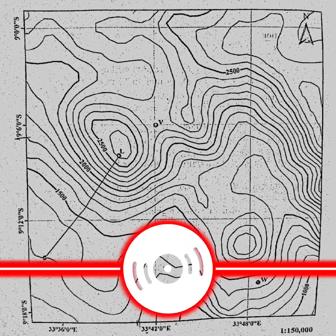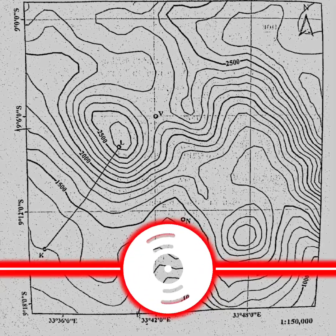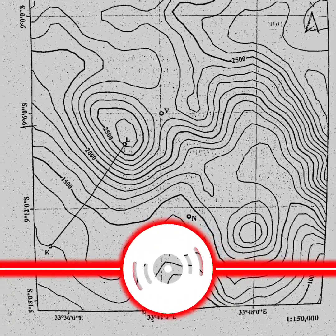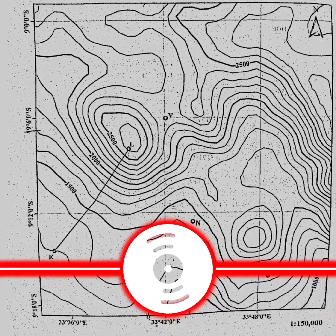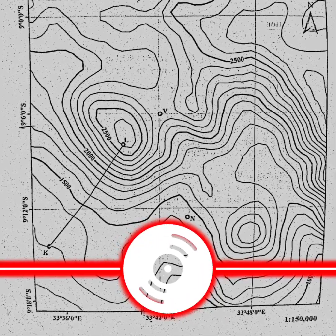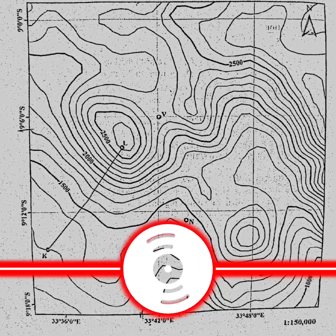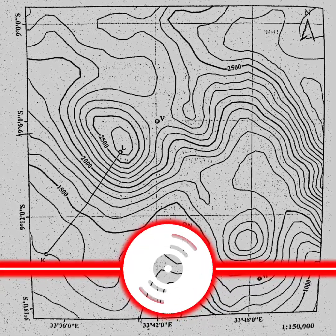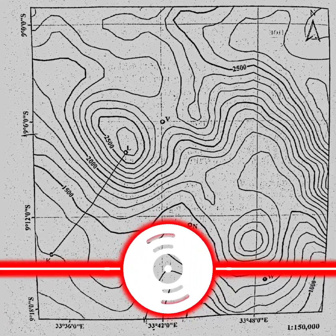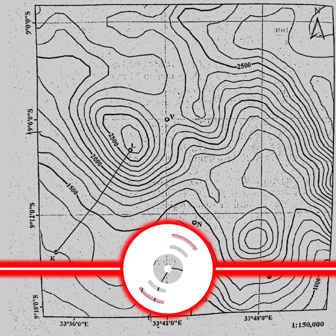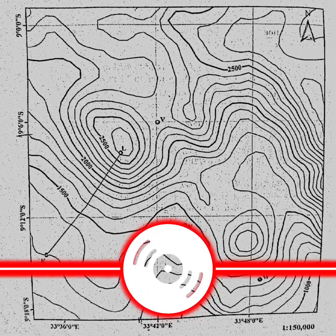In order to answer this question we are expected to divide the large denominator by the ratio. So 215,000 divided by 4, which comes to 1:62,500. So the map is enlarged four times.